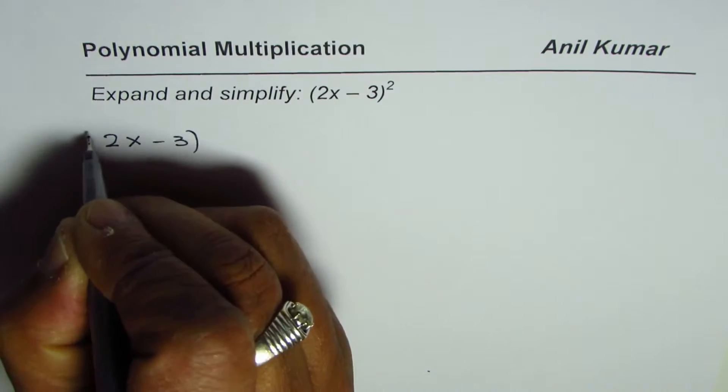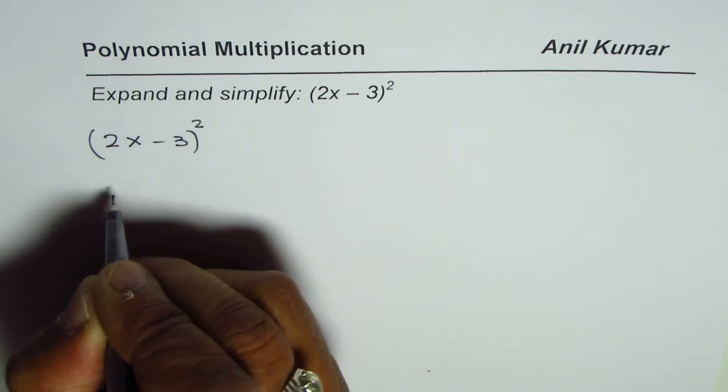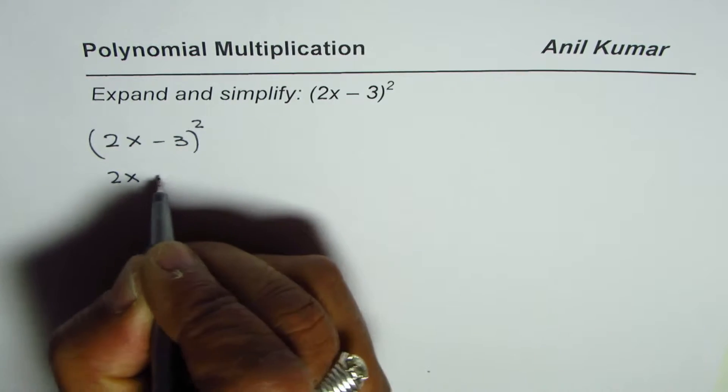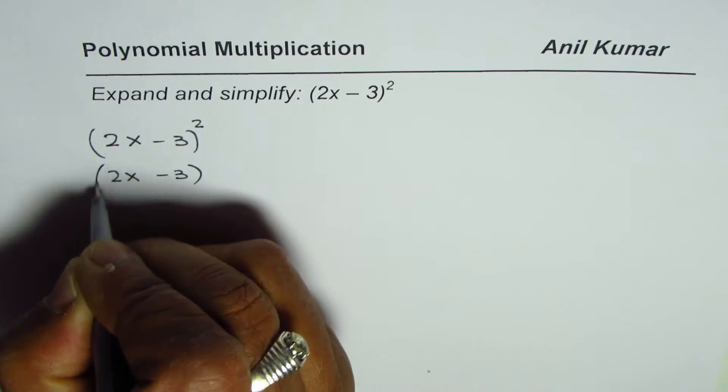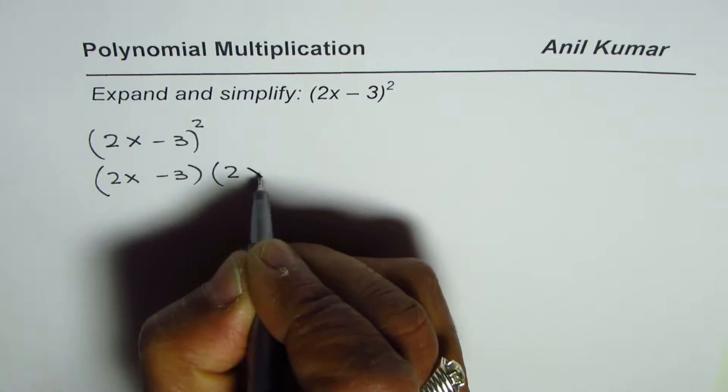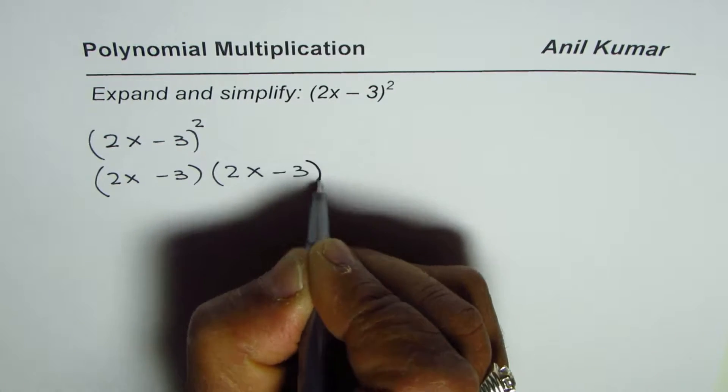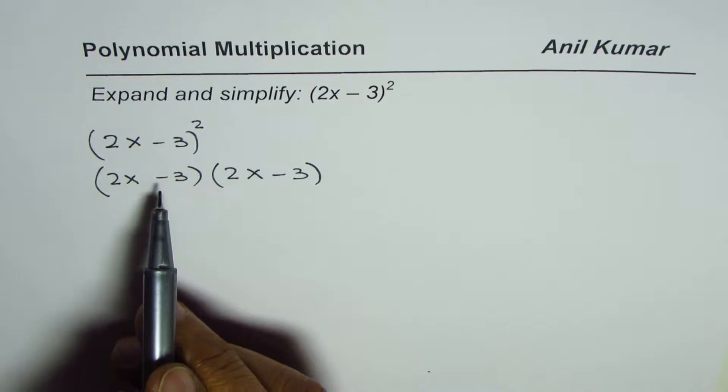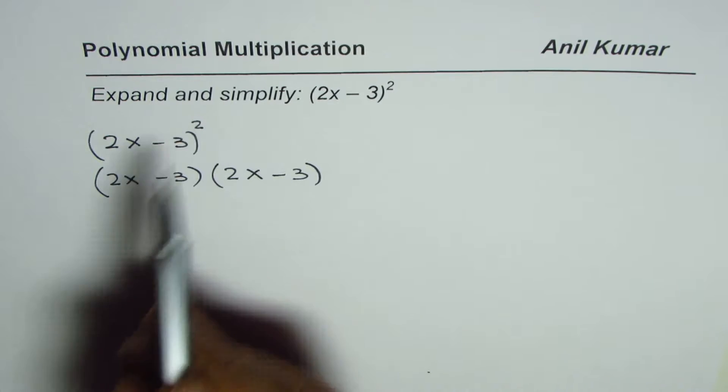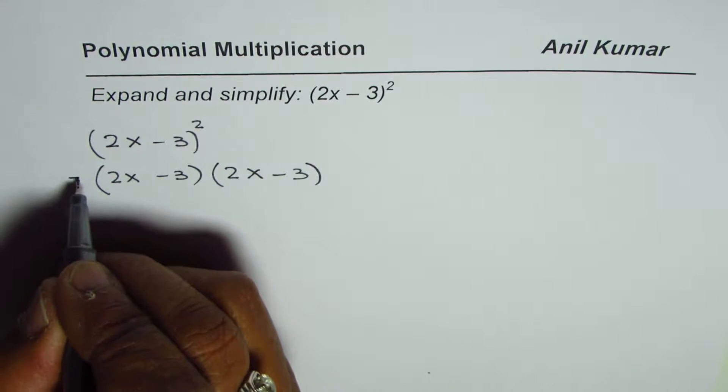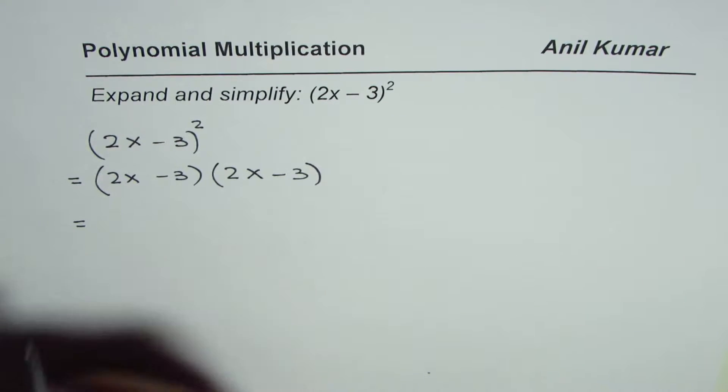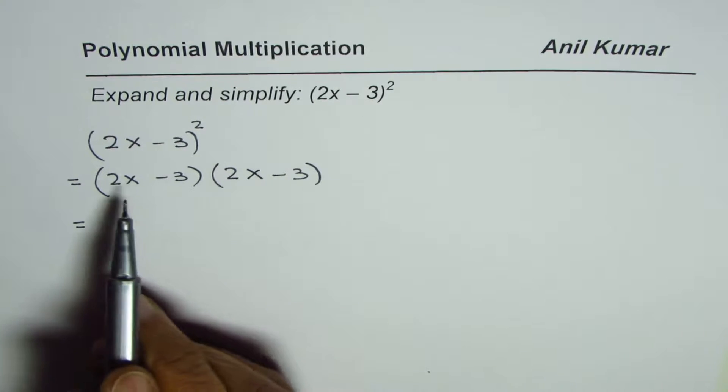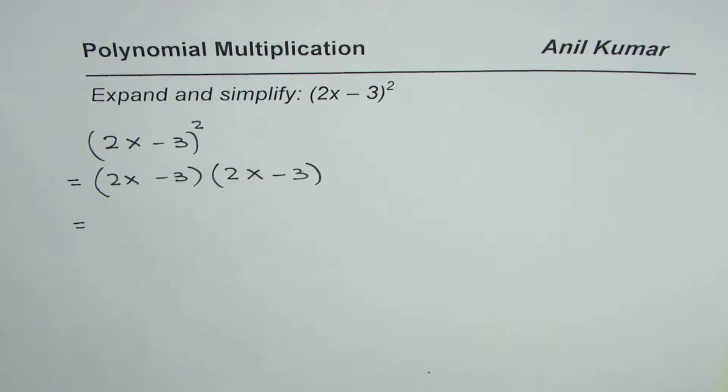(2x - 3)² really means it is (2x - 3) times (2x - 3). So this binomial is multiplied by itself and that is how we get a square there. That is the first part and now we will expand using distributive property.